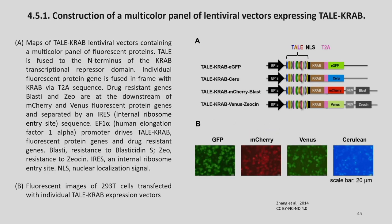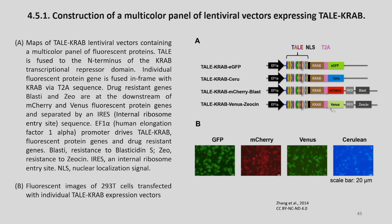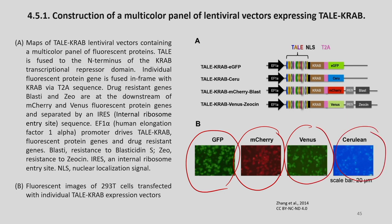In addition, PLV-TAL-KRAB-mCherry-blasticidin and PLV-TAL-KRAB-Venus-geneticin vectors were equipped with two drug resistance genes, blasticidin and geneticin. This is the construction of a multicolor panel of lentiviral vectors, which we have discussed, and these are the various fluorescent genes: EGFP, cerulean, mCherry, and Venus. The last two constructs are also given drug resistance genes blasticidin and geneticin, and when transfected into cells you can see the expression of these various fluorescent proteins.